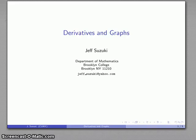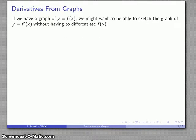The derivative is the slope of the tangent line, and one of the things that means is if you actually have the graph of a function, you can get a pretty good idea of what the derivative is going to look like. So if I have a graph of y equals f of x, I can actually try and sketch the derivative graph without having to do the differentiation.